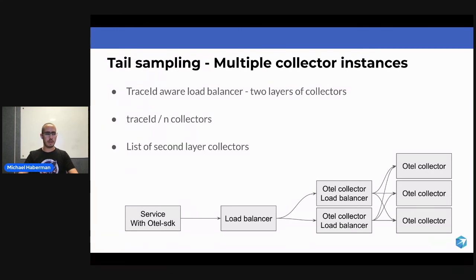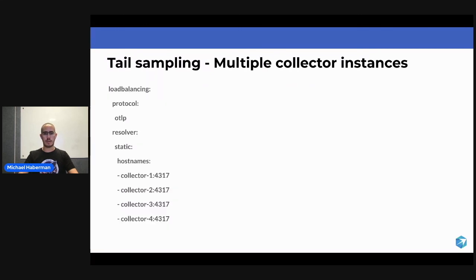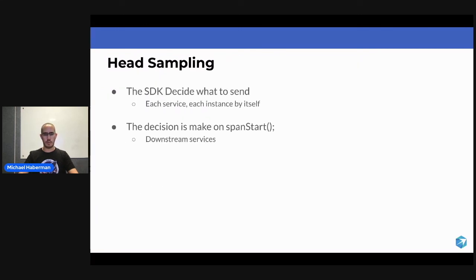Again, you can have two layers: the first one is a load balancer that is aware of the trace ID, and then the collector as you would want it to do.